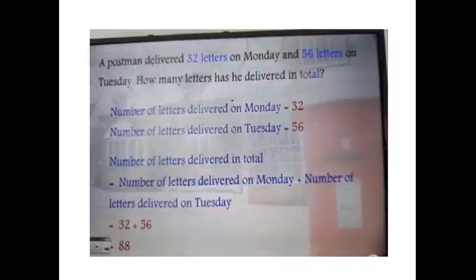See this. A postman delivered 32 letters on Monday and 56 letters on Tuesday. How many letters has he delivered in total? The word 'total' indicates addition. What is given? Number of letters delivered on Monday is 32. Number of letters delivered on Tuesday is 56. We have to find the total. Total means 32 plus 56.